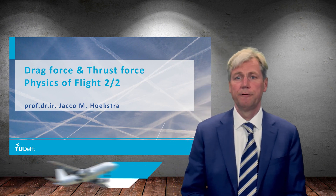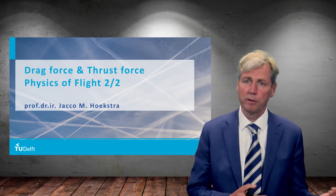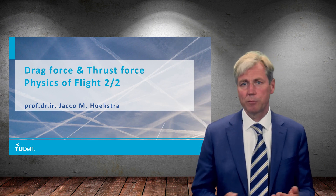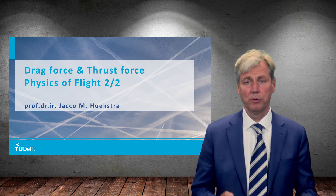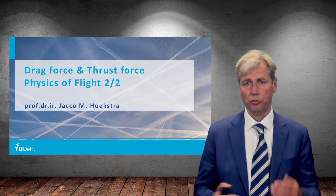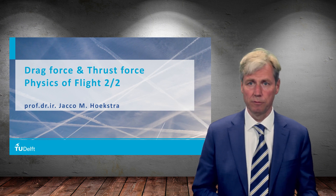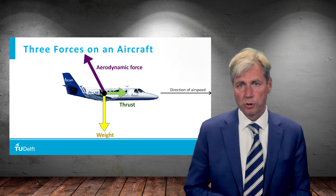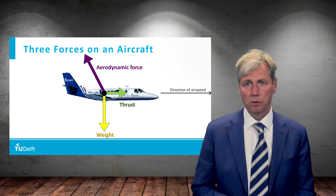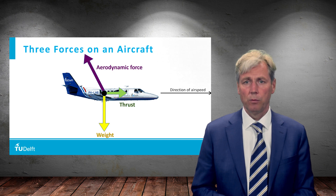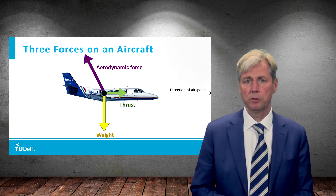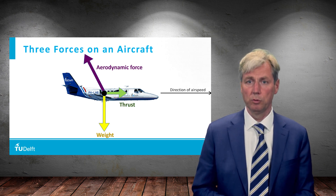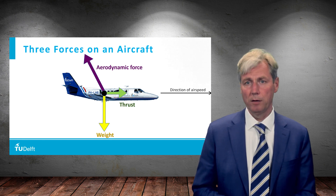This is the second lecture on the physics of flight. We looked at the lift force in the previous lecture, and we said there's a price to pay for this lift force — that's the drag force. In this lecture we will look at the horizontal forces: drag and thrust, because the thrust force is how we counter the drag force. If the plane is flying at constant altitude and constant speed, we have three forces acting on it: the aerodynamic force pointing up and backwards, the thrust force pointing forwards to counter the backward component, and the weight.